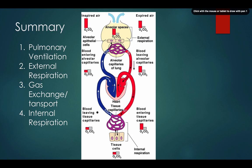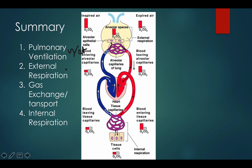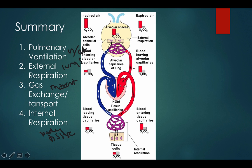The four major events of respiration are: pulmonary ventilation — air moving in and out; external respiration — gas exchange occurring at the lungs; gas transport — the movement of materials throughout the circulatory system; and internal respiration — the gas exchange occurring in the body tissues. I hope you found that helpful.